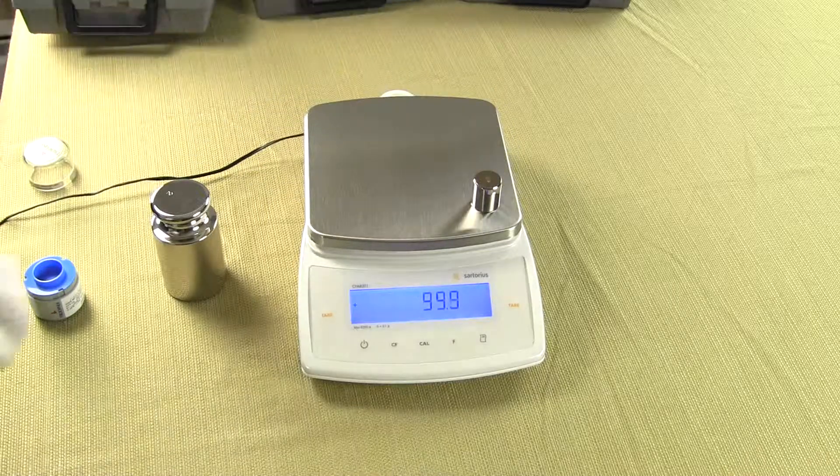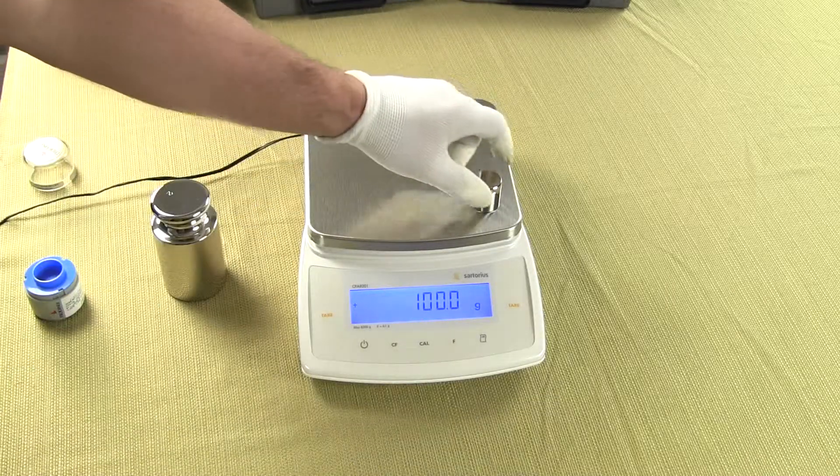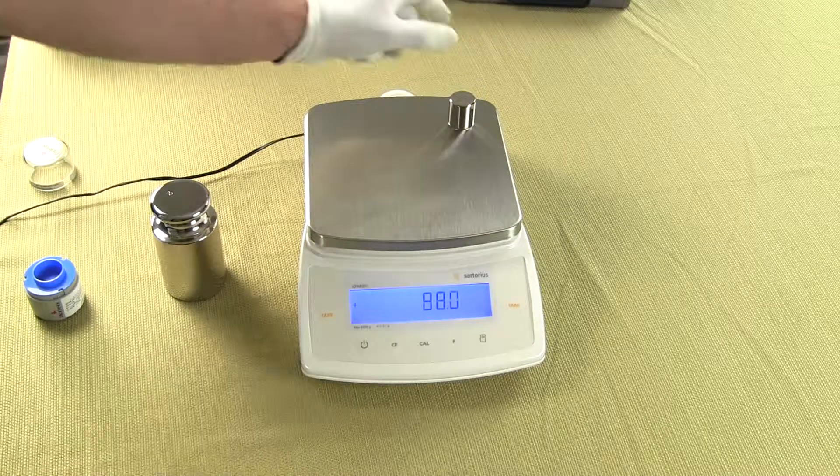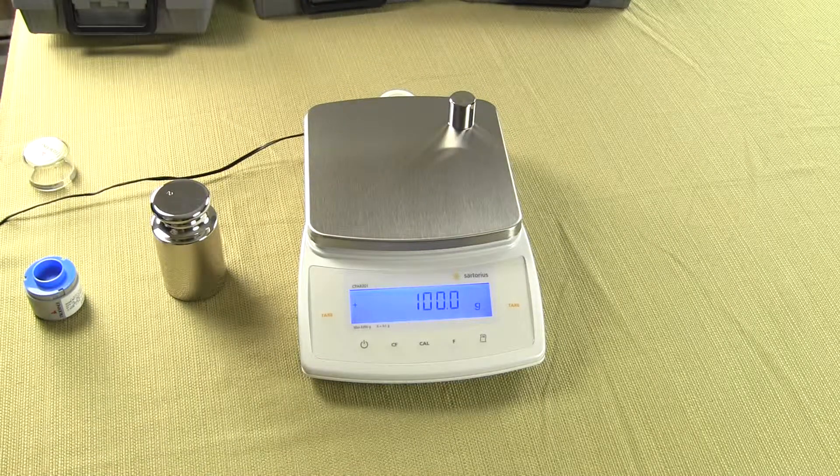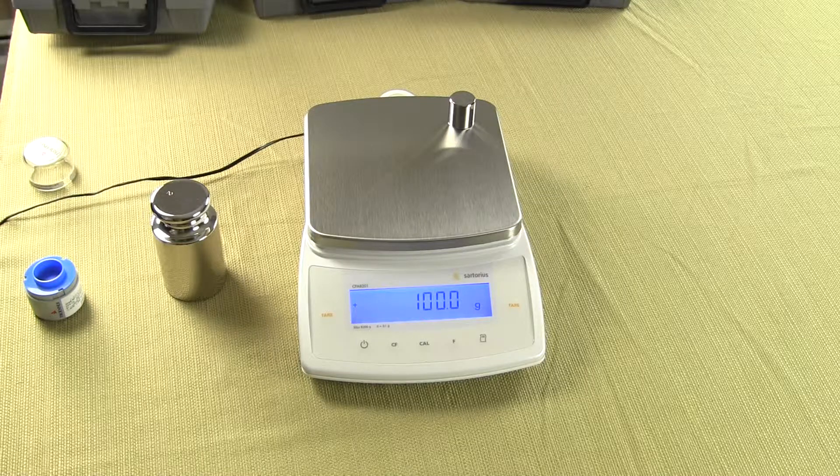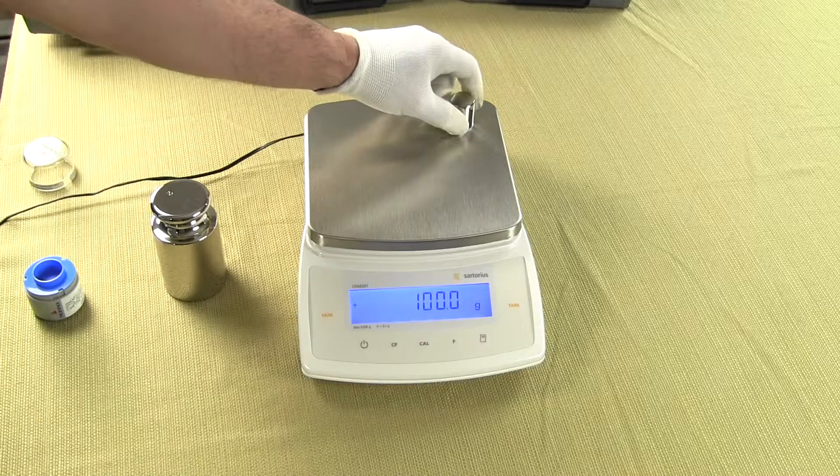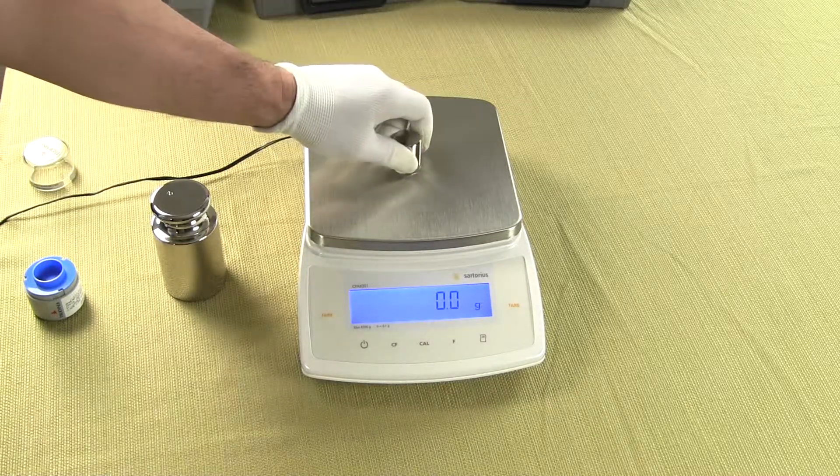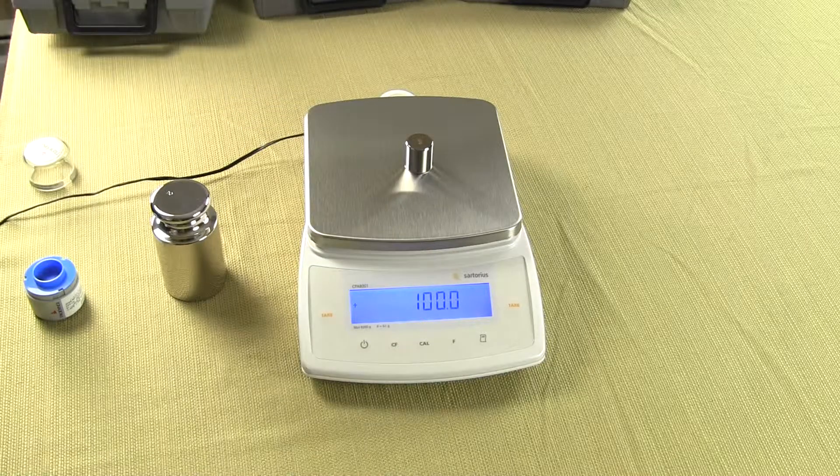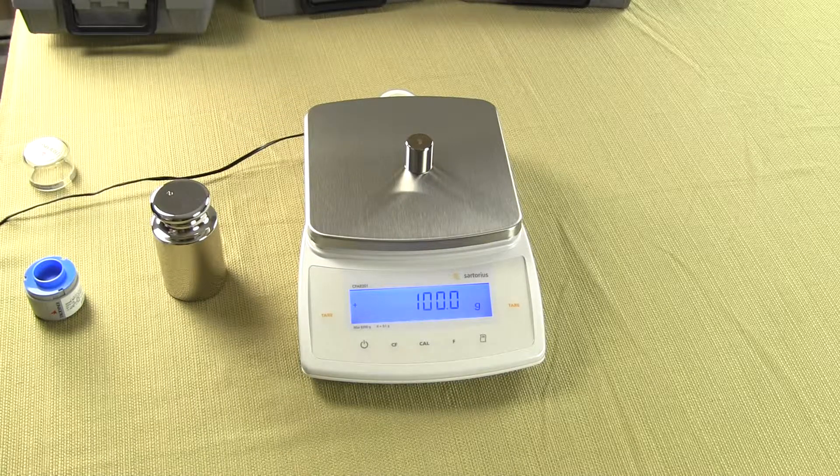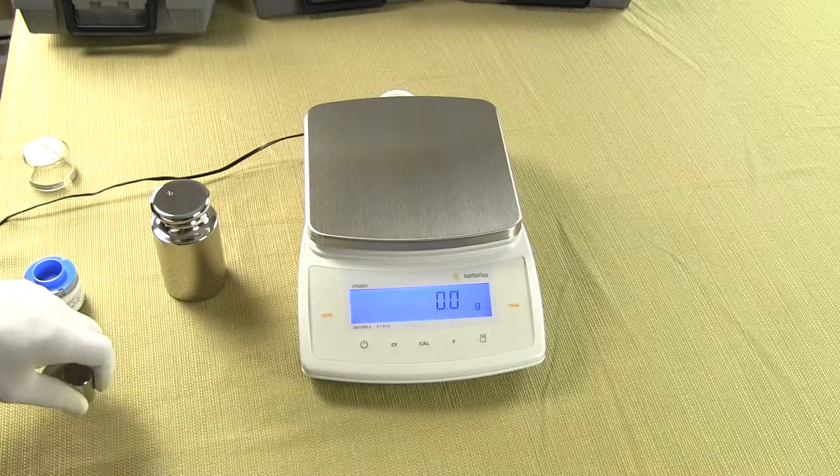So you'll notice when I put the weight on all four corners the balance is right on the money and you'll see how fast the response time is. If you bought a balance from another company, a no-name brand, put a weight on it and you'll see the balance start to drift all over the place. You don't see that with Sartorius.